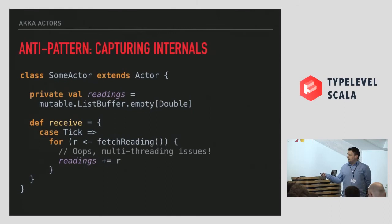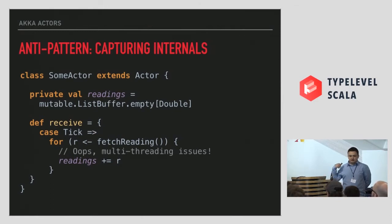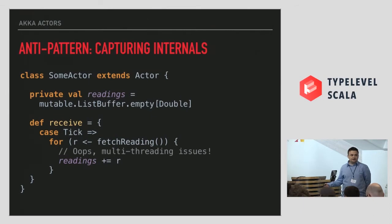Another anti-pattern that happens mostly by accident is exposing the external state. Actors protect us — they've got encapsulation and ordering guarantees. But you can easily expose your internal state in closures. This for-loop is a for-comprehension on a future, and 'readings' escapes and will be processed in another thread, which is not going to be in the context of our actor. This leads to multi-threading issues.